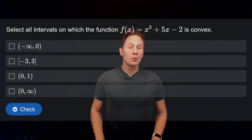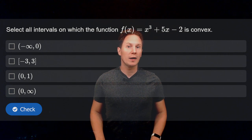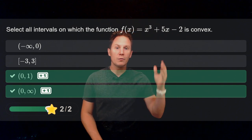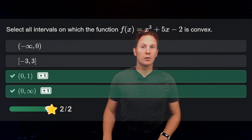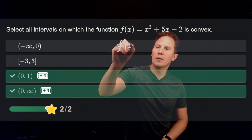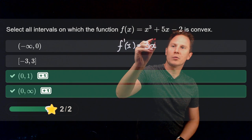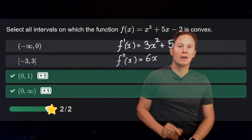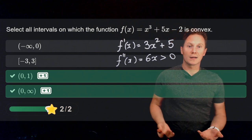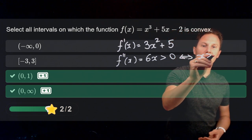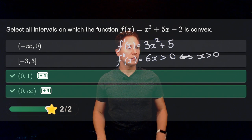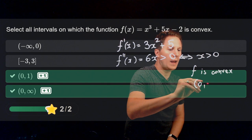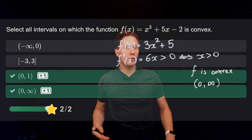Select all intervals on which the function f(x) = x³ + 5x - 2 is convex. To find where the function is convex, we need to find where the second derivative is positive. The first derivative is 3x² + 5, and its derivative — the second derivative of our function — is 6x. To see where this is positive, we just need to find where 6x > 0, which happens exactly when x > 0. Therefore, by the concavity test, f is convex for all x in (0, ∞), and the points between 0 and 1 are also contained in that interval.